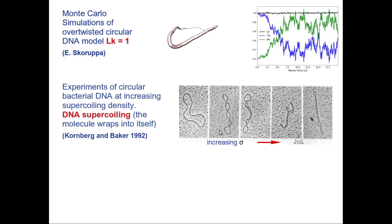If the linking number increases, you see that it partitions — the molecule changes conformation — and now I have arrived at a state where I can estimate the writhe of this conformation by looking at how many self-crossings appear in this projection. This is an electron microscope image where this piece of DNA is immobilized on a planar substrate. By increasing sigma (which is proportional to delta LK), I get more and more self-crossings and go to a state with higher and higher writhe.